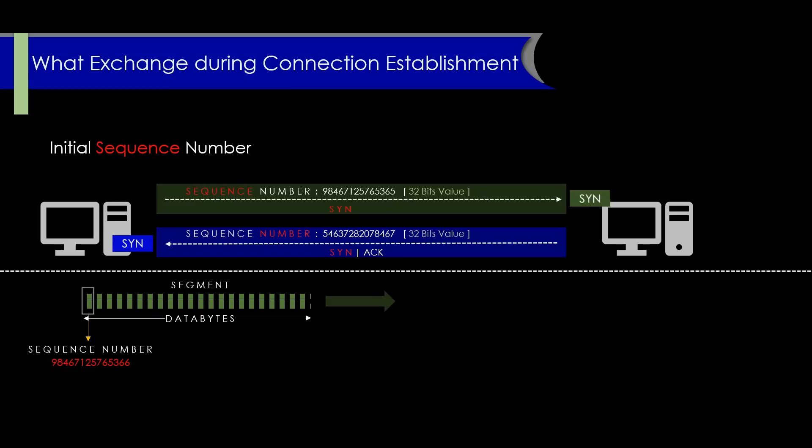For example, from the sender to the receiver side, we have a sequence number starting from 9846712576536 for this data segment, which represents the first byte. From the other end, the first byte is also referred to by its own sequence number, such as 546372820784 68.